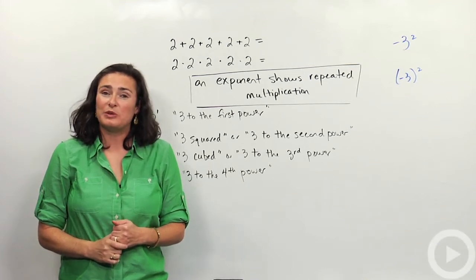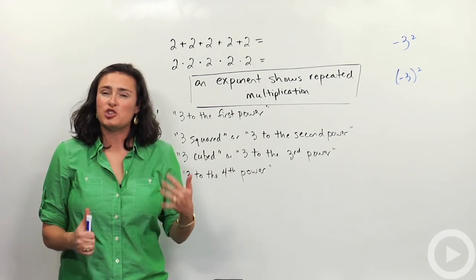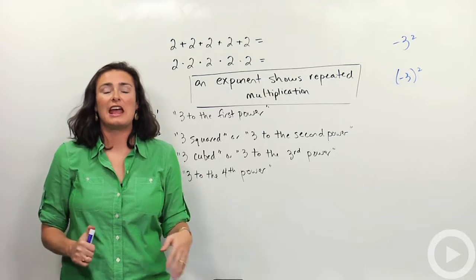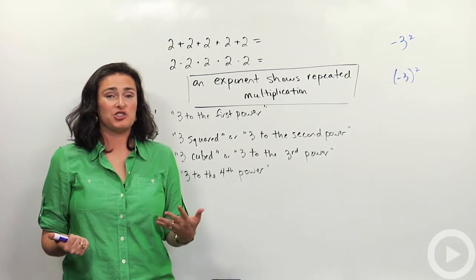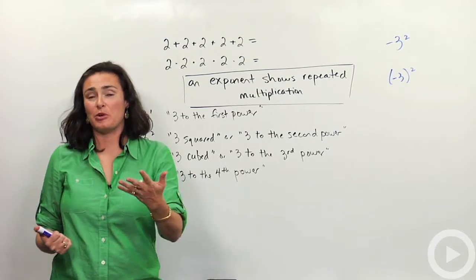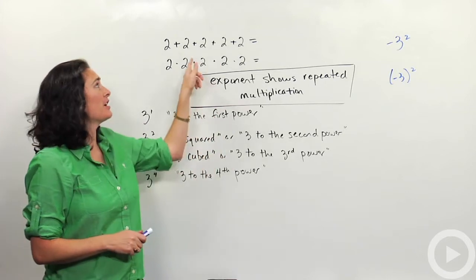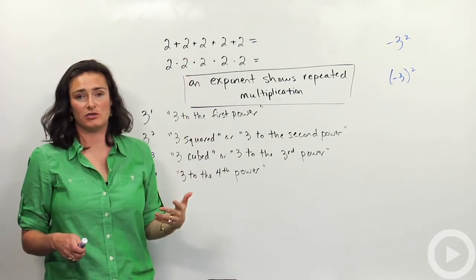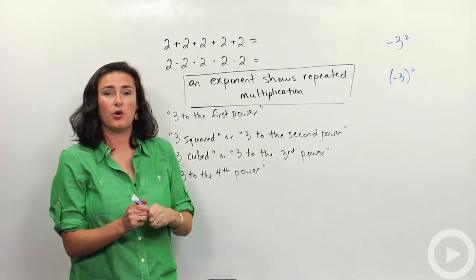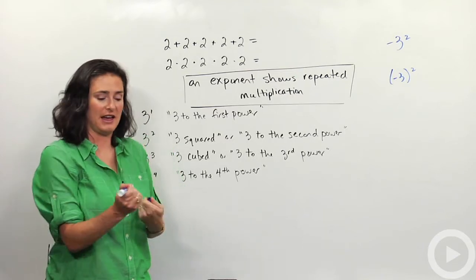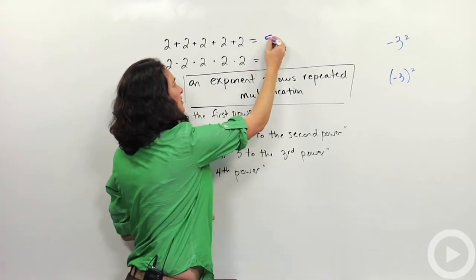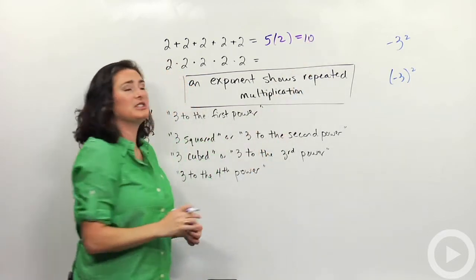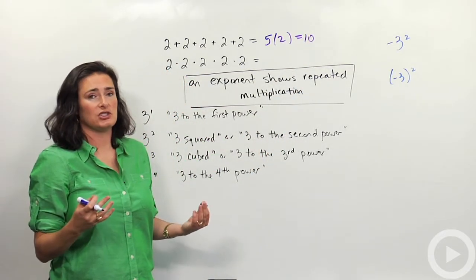We've talked about how multiplication is a short way to represent repeated addition. Here we're going to talk about another way we can shorten repeated multiplication. First, let's review what we already know. If I have 2 plus 2 plus 2 plus 2 plus 2, that's five 2's, so a way I could write that is 5 times 2. Multiplication is repeated addition.